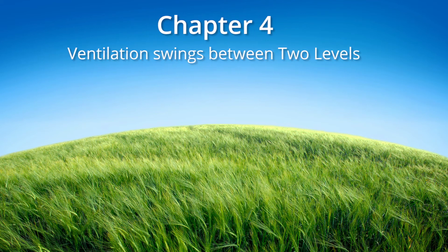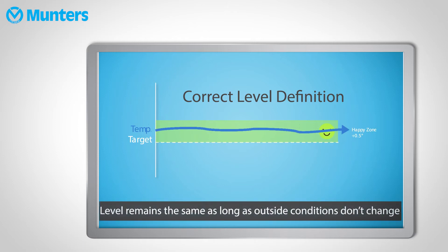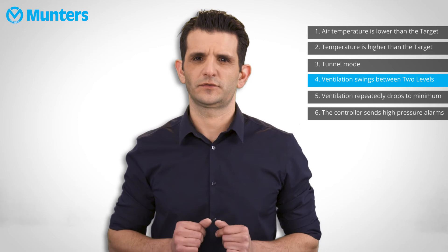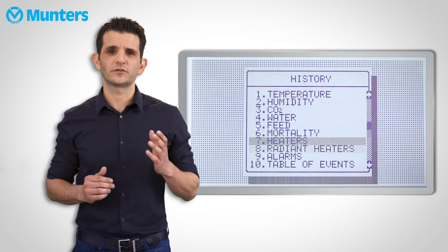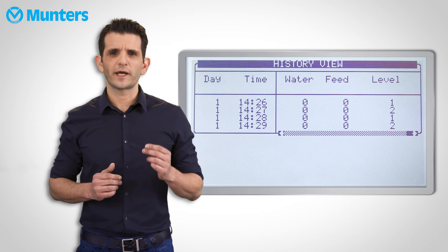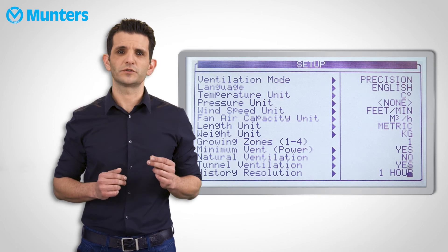There may need to be fine-tuning between winter and summer. Regarding ventilation swings between two levels: as growers, our aim is to maintain a very stable climate in the house and to find a level that is suitable for the day and maintain that level for as much time as possible. History data is a very good tool to monitor that we are running smoothly and not bouncing between levels. Select History menu and then History View. Scroll to the right and you will see a column for the levels data. For more accurate readings, go to Installation, then Setup, and change the history resolution to 15 minutes.